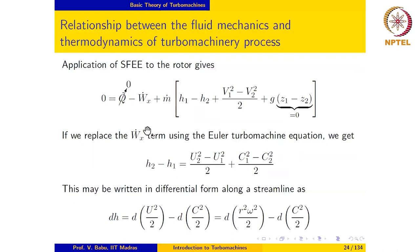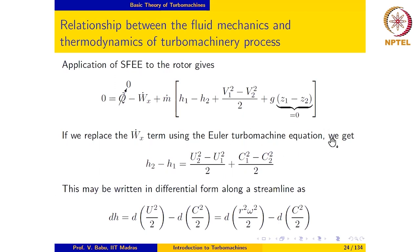If we apply the steady flow energy equation to the rotor assuming no heat loss, we obtain an expression involving static enthalpy and change in total kinetic energy of the fluid, neglecting elevation changes in the rotor — a reasonable assumption. The connection between this thermodynamic equation and the Euler turbine equation is provided by the shaft work term W_x dot. Replacing W_x dot using the Euler turbomachinery equation gives a relation where, on the left-hand side, we have change in enthalpy and on the right-hand side, changes in absolute velocity, relative velocity, and blade velocity — providing the link between fluid mechanics and thermodynamics.